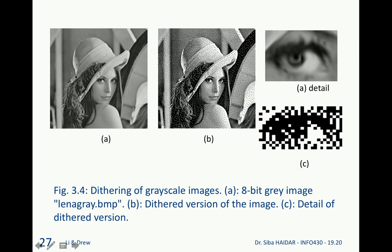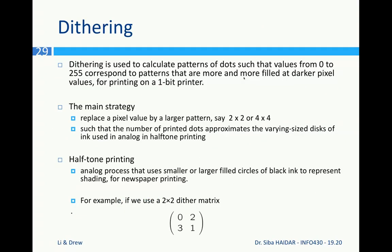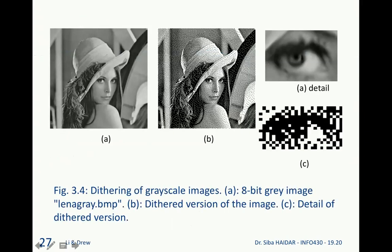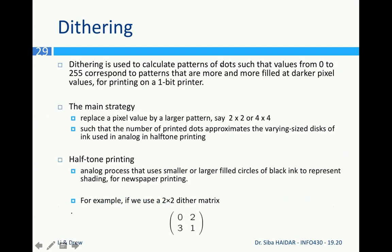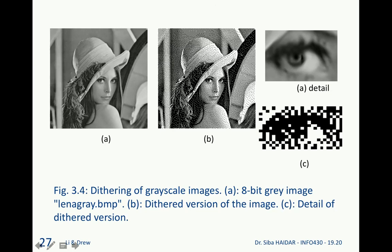Dithering is the operation of transforming 8-bit grayscale images into 1-bit images, but this is not binarization — binarization does not take the grayscale into account. With dithering, the image still appears as grayscale, but when you zoom in it is actually black and white. Figure (a) shows an 8-bit gray image of Lena; figure (b) shows the dithered version — it is not truly gray, but looks like grayscale; zooming in reveals it contains only black and white pixels.